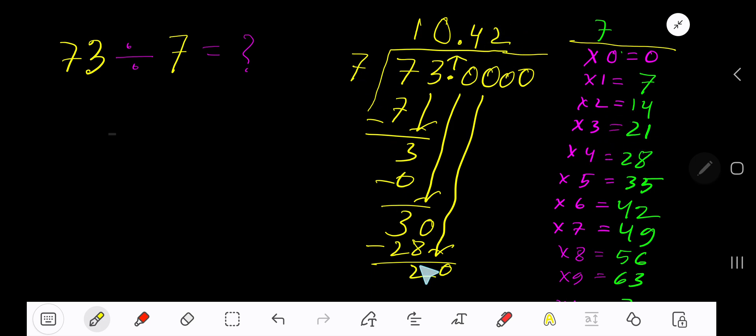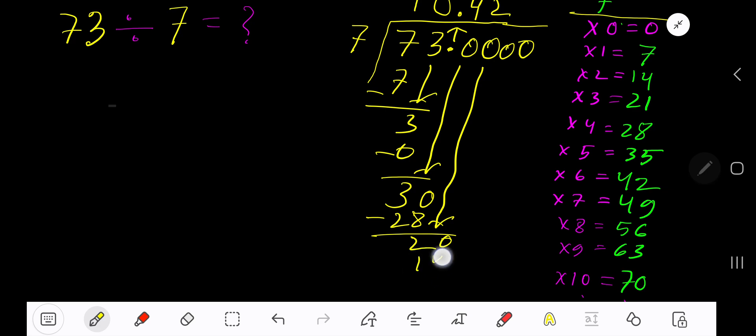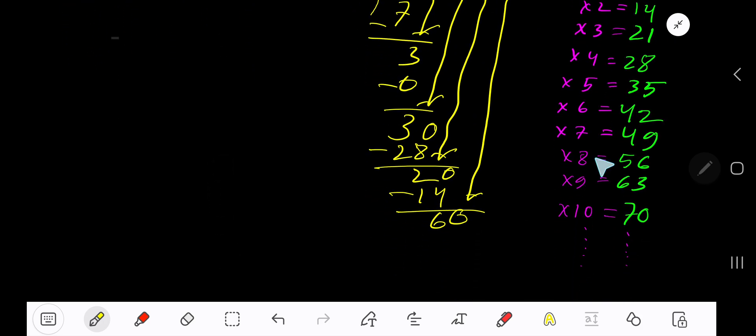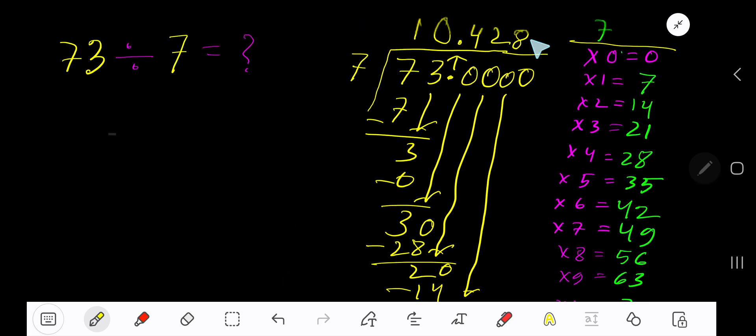2 times 7 is 14, subtract to get 6. Bring down another zero. 7 goes into 60 how many times? 8 times. 8 times 7 is 56, subtract to get 4. You can bring down more zeros, but since we have 3 decimal places, we stop here. So our answer is 10.428.